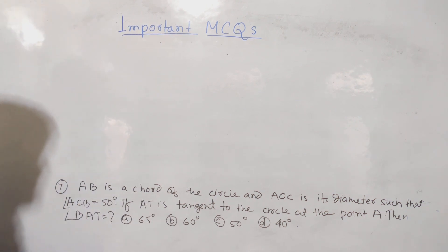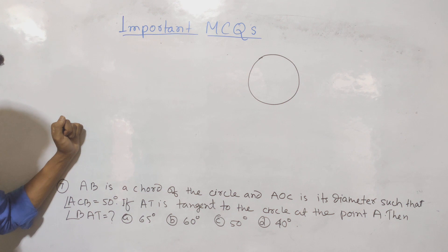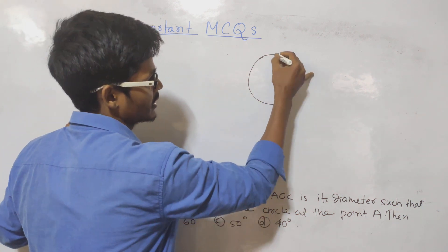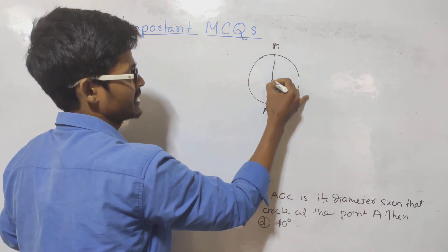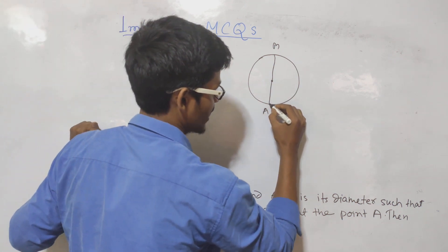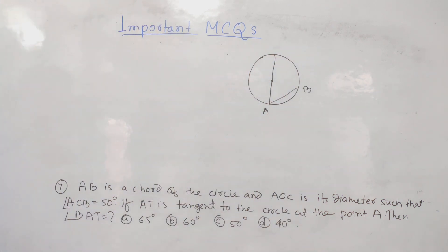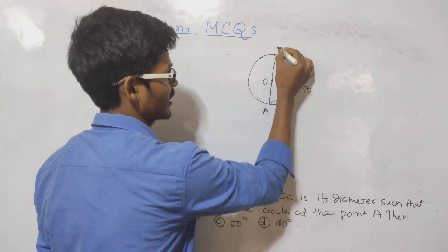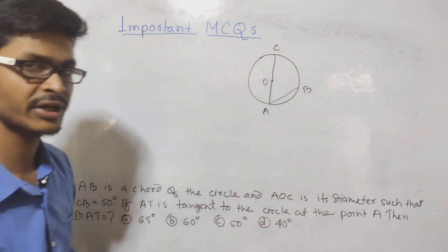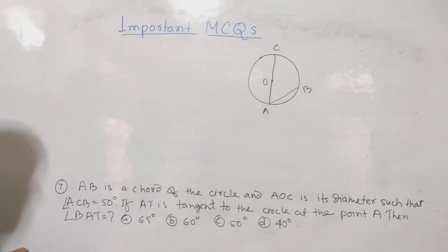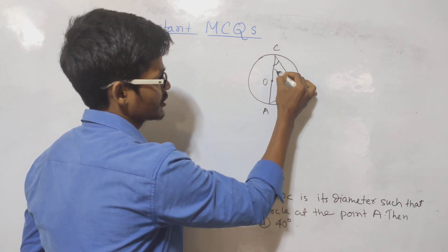AB is the chord of the circle and AOC is the diameter. We have a circle with a chord AB and diameter AOC passing through the center O. The angle ACB is equal to 50 degrees. In a semicircle, the angle in a semicircle is 90 degrees — so angle AOB in the semicircle is 90 degrees.